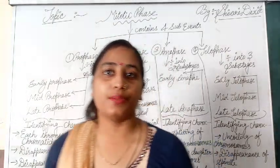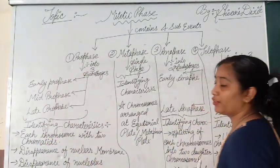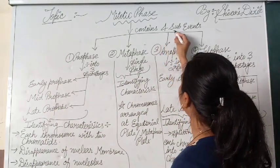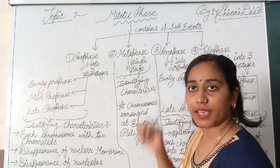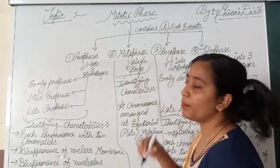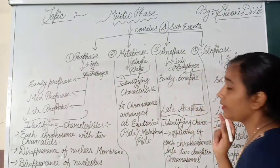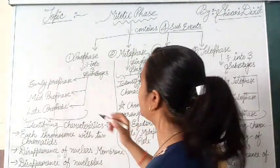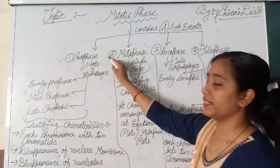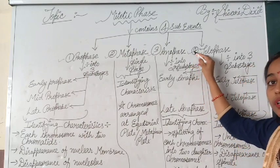Let's understand this mitotic phase in detail. First of all, I would like to make clear how many sub-events a mitotic phase has. It has 4 sub-events. The names of these sub-events are: number 1, prophase; number 2, metaphase; number 3, anaphase; and number 4, telophase.